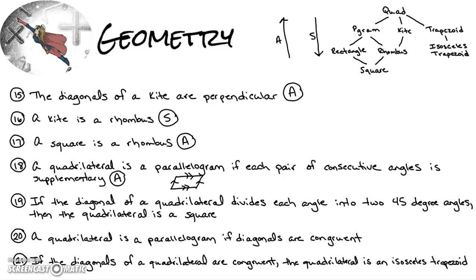Number nineteen: if a diagonal of a quadrilateral divides each angle into two 45-degree angles, then the quadrilateral is a square. That is always true. If you draw a diagonal splitting each angle into 45-45, those corners are 90 degrees, and the 45-degree angles indicate parallel sides on both pairs, making the other two corners also 90. This bisecting of opposite angles by the diagonal only happens in a square, not in a generic rectangle.